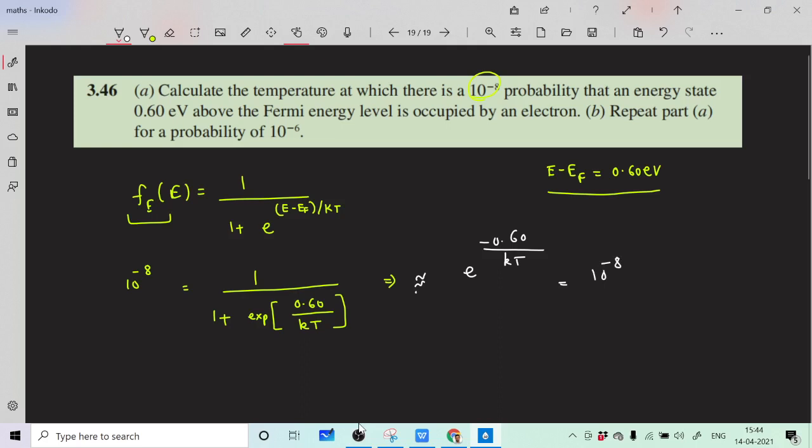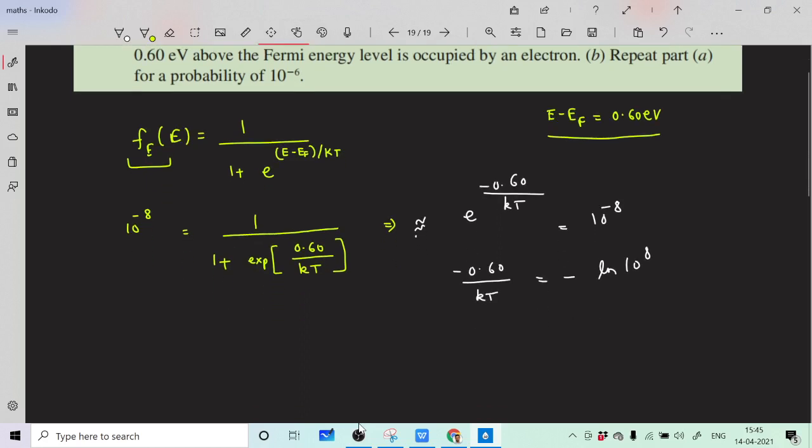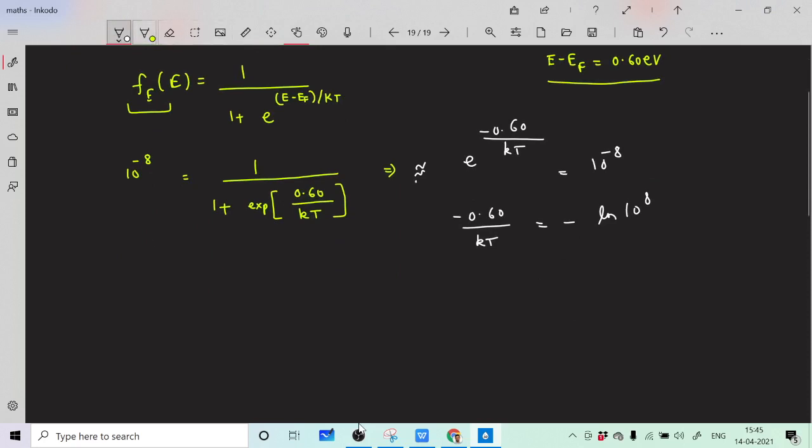Now take logarithm both sides. You will get minus 0.60 by kT equals minus ln 10 to the 8, which is 8 ln 10. So we are getting 0.60 by kT equals ln 10 to the 8, which equals 8 ln 10.